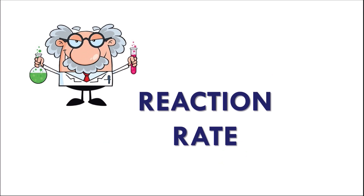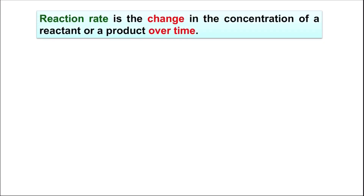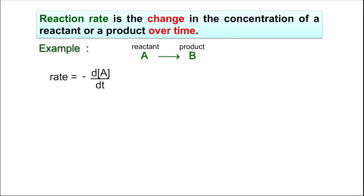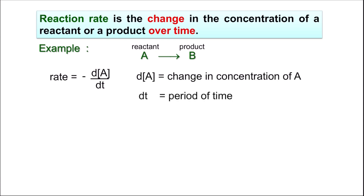First, we are going to learn what the reaction rate is. The definition of reaction rate is the change in the concentration of a reactant or a product over time. For example, you have reactant A producing product B. You need to know how to write the expression for rate based on reactant A and product B. Since reactants decrease over time, the rate expression is: rate equals negative d[A] over dt, where d[A] is the change in concentration of reactant A and dt is the period of time.